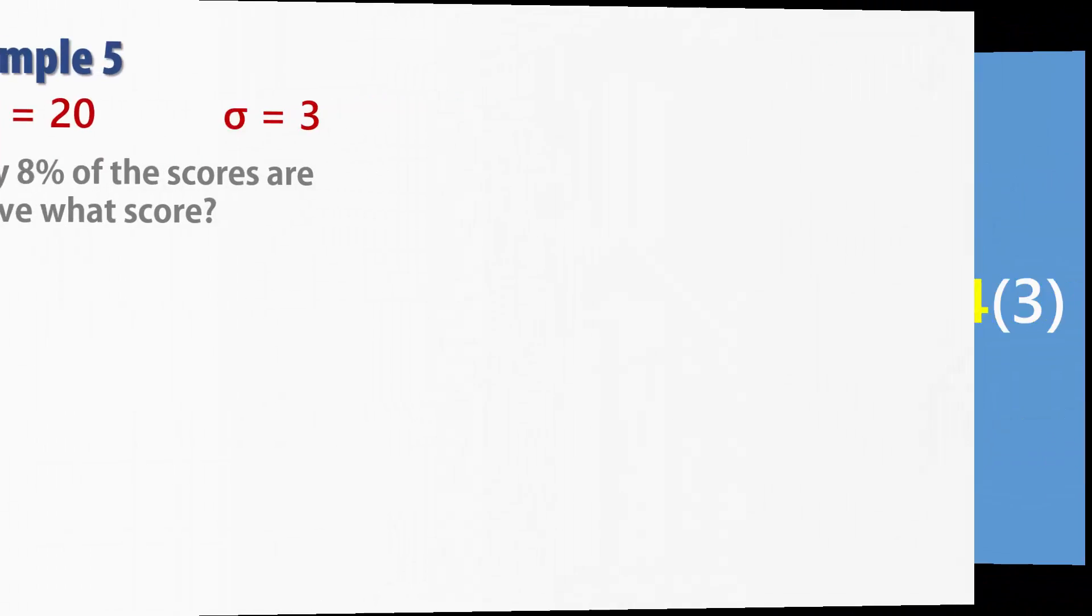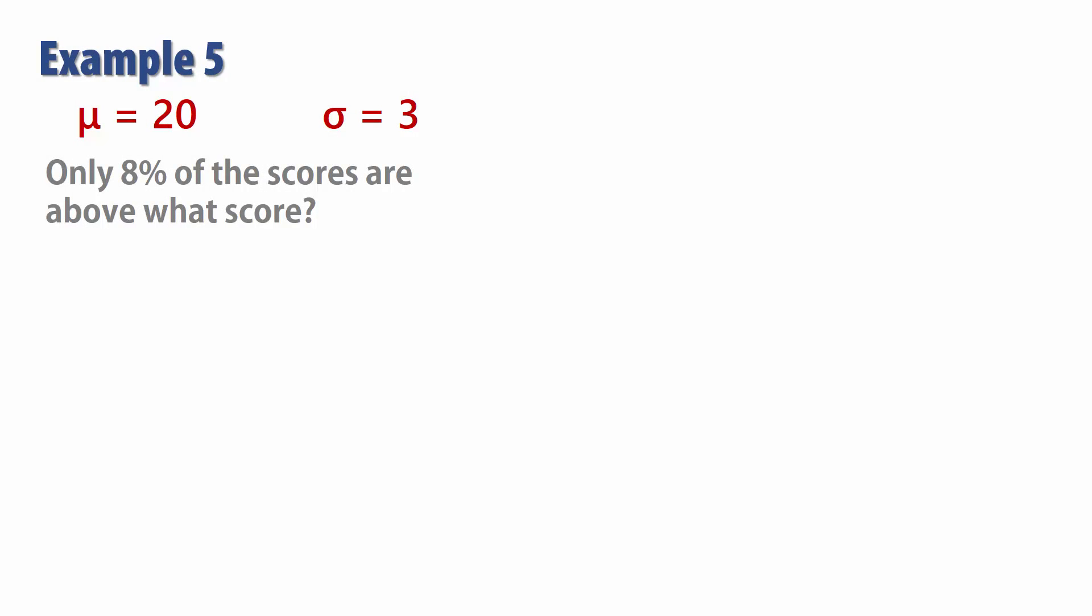Next example. In this form, we want to find a score such that only 8% of the values are above that score. That is, we have 0.08 in the right tail here. Since the areas in our tables are less than areas, we do 1 minus 0.08 to obtain a less than area of 0.92.